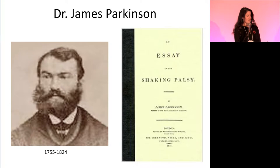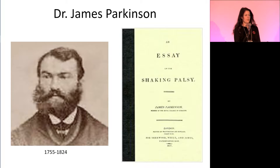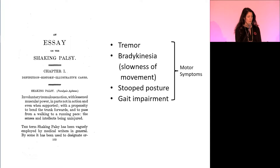I want to introduce Dr. James Parkinson, who lived in the 18th and 19th century. He was a very good doctor but also a paleontologist and a politician. He wrote an essay called 'Essay on Shaking Palsy' based on about six patients, and in this book he described Parkinson's disease for the first time — though it was actually a mentee of his who later named it Parkinson's disease. He described many of the motor symptoms: tremor, slowness or bradykinesia, stooped posture, and shuffling gait.